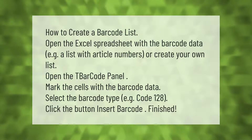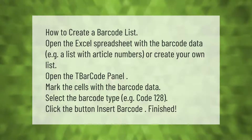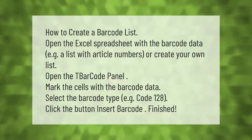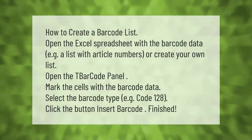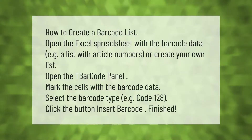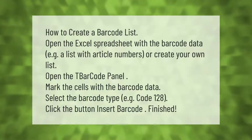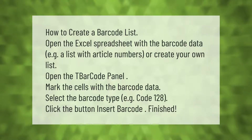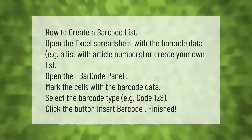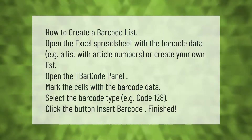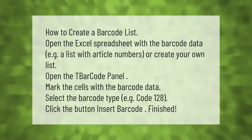How to create a barcode list: open the Excel spreadsheet with the barcode data, e.g. a list with article numbers, or create your own list. Open the T-Barcode panel, mark the cells with the barcode data, select the barcode type, e.g. Code 128, click the button 'Insert Barcode'. Finished.